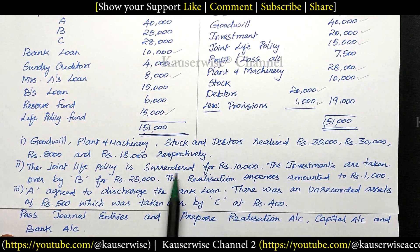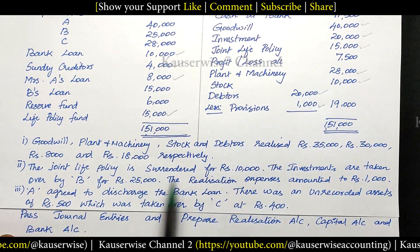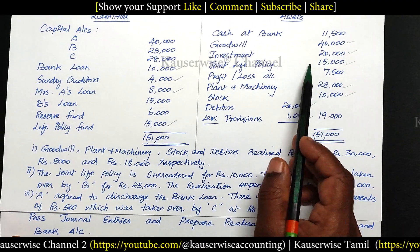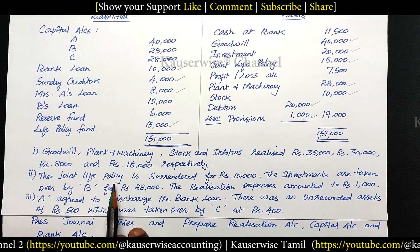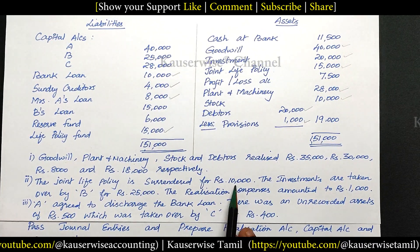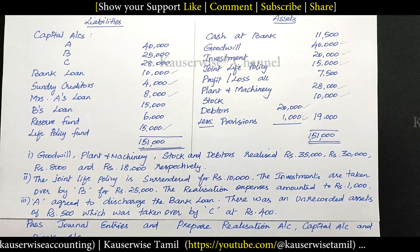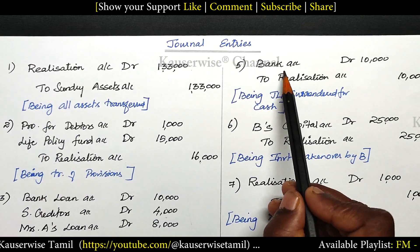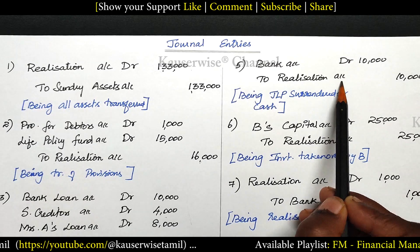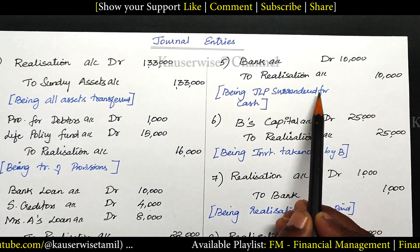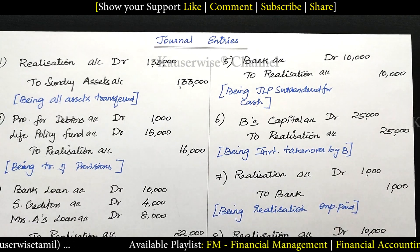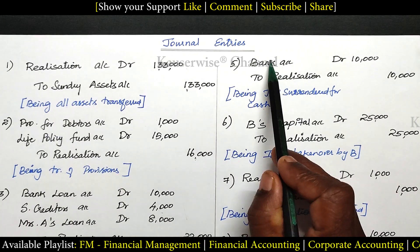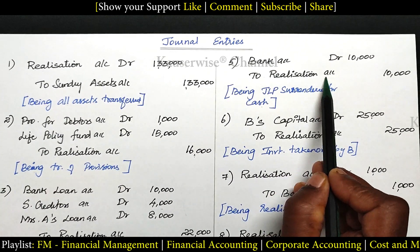Second adjustment: the joint life policy is surrendered for rupees 10,000. This asset is surrendered for cash, so it is also an inflow of cash. Entry: Bank Account Dr. to Realization Account — 10,000.